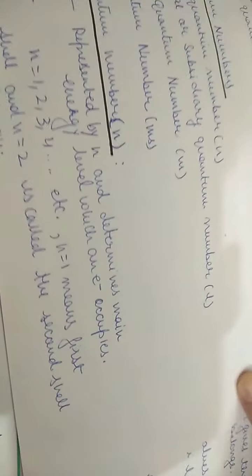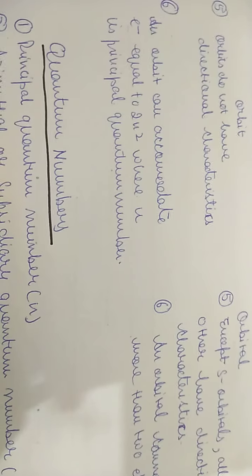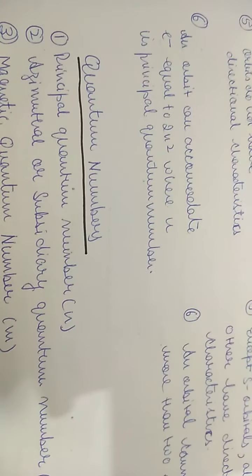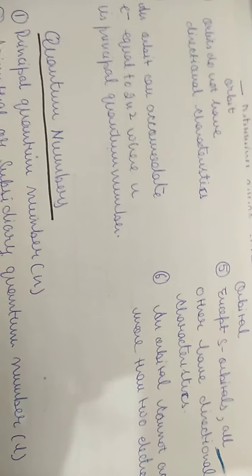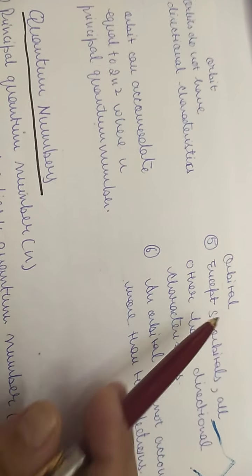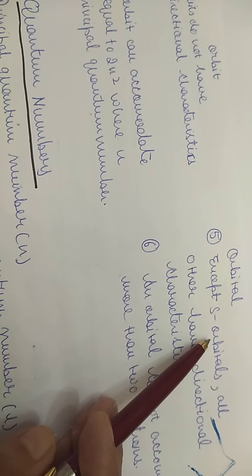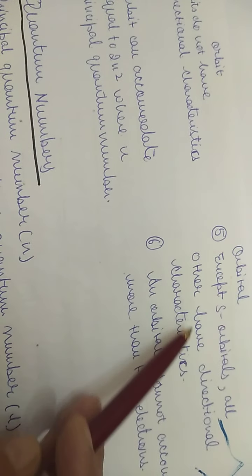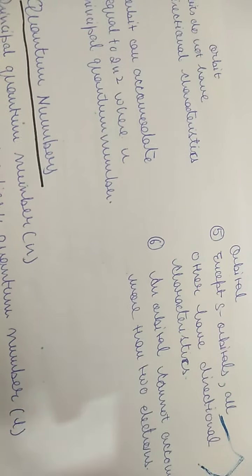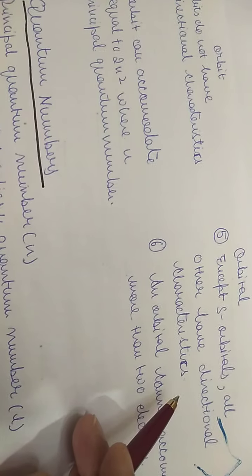Orbits do not have directional characteristics; there is no specific direction associated with an orbit. But orbitals, except the S orbital (which is spherical in shape), all other orbitals have directional characteristics.